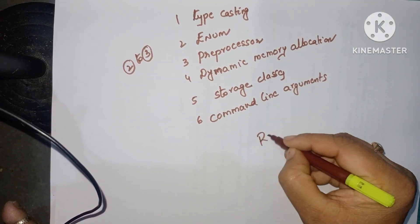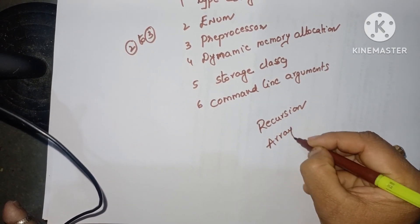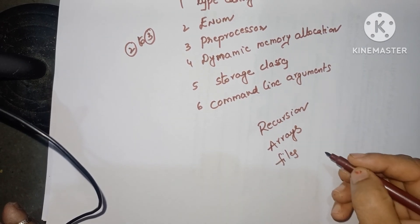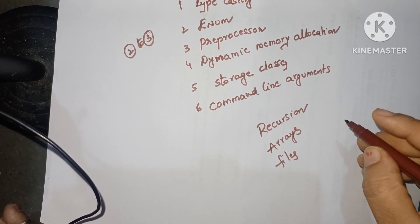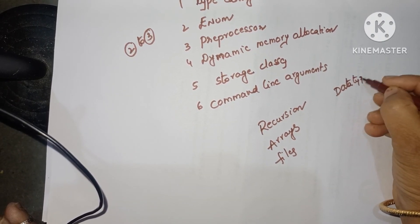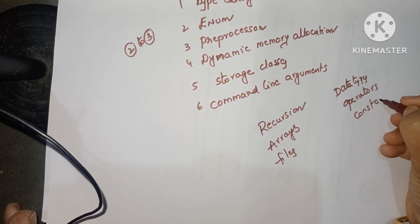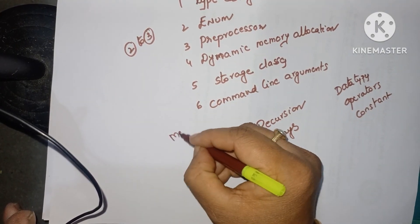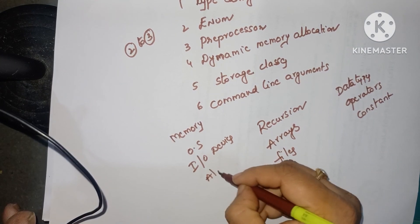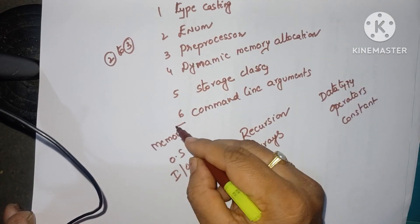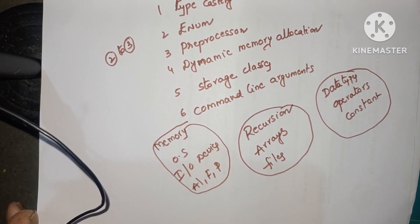For the exam, also study: recursion programs, arrays, files — what is a file, different types, file modes, and file programs. String handling functions are important. Data types, operators, and constants are important. General questions include: memory, operating systems, input and output devices, algorithm, flowchart, and pseudocode. Read all these concepts carefully and you will be able to answer all questions and get very good marks.